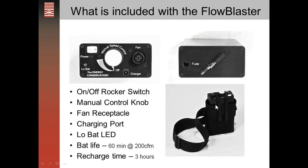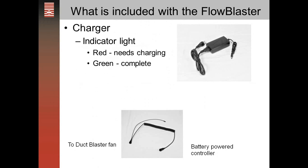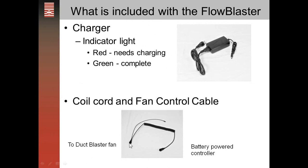The recharge time for the battery is about three hours. The charger has an indicator light — when you plug it into the wall and then into the battery speed controller, red indicates it needs charging and green indicates charging is complete. The coil cord connects the duct blaster fan to the battery-powered speed controller, and it also has the control cable that goes up to the DG700.